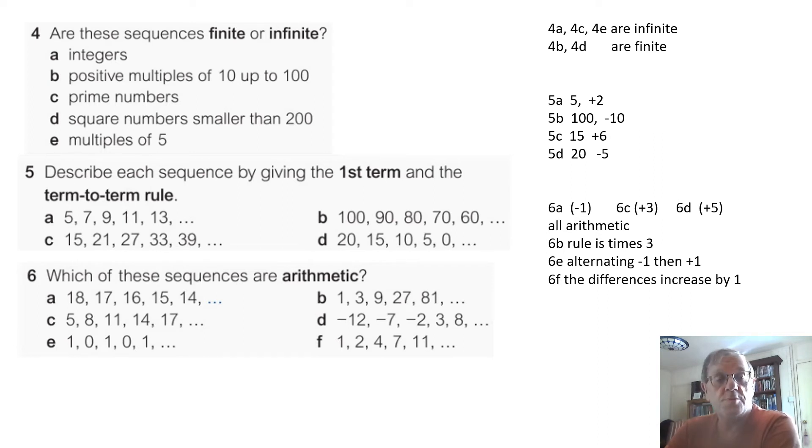Square numbers for D smaller than 200. So 1 squared is 1, 2 squared is 4, 3 squared is 9 and so on. Up to 14 squared is 196. It's finite. It stops. Question 5. The first term on A is 5 and the term to term rule is add 2. B, the first term is 100 and the term to term rule is minus 10. C, the first term is 15 and we are now going up in 6s so the term to term rule is plus 6. And D, the first term is 20 and we're coming down in 5 so the term to term rule is minus 5. Question 6. Which of these sequences are arithmetic? Well, for an arithmetic sequence it's either got to go up or down by the same amount. So A is coming down by 1, C is going up by 3 and D is going up by 5. So they are all arithmetic.